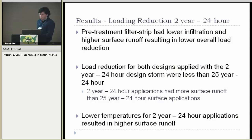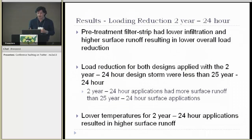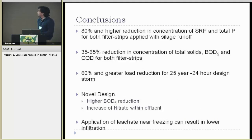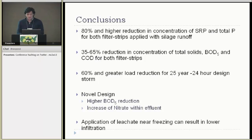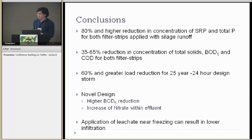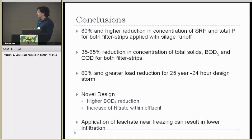Pre-treatment had lower infiltration. The lower reductions for both storms were less for the 25-year 24-hour due to lower temperatures and perhaps higher soil moisture in both filter strips. In conclusion: 80% and higher reduction in concentration for phosphorus — both soluble reactive phosphorus and total phosphorus. 35% to 65% reduction in concentration of total solids, BOD, and COD for both filter strips. 60% and greater load reduction for the 25-year 24-hour design storm. The pre-treatment design had higher BOD-5 reduction and an increase of nitrate within the effluent. Application in colder temperatures could increase soil moisture and result in lower infiltration.